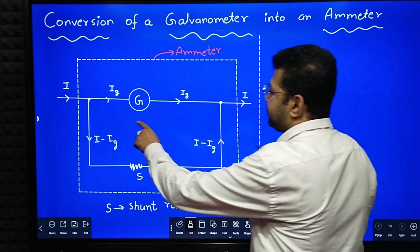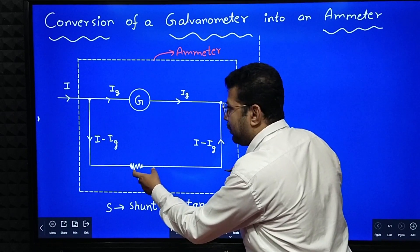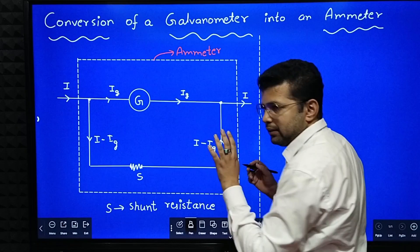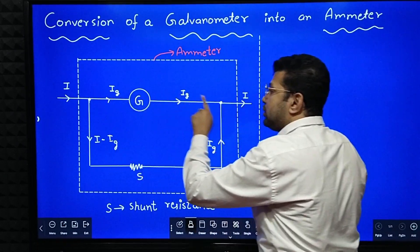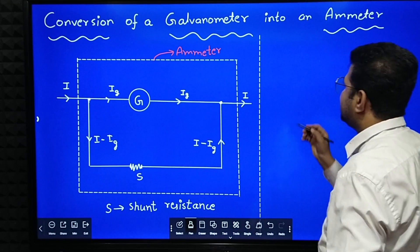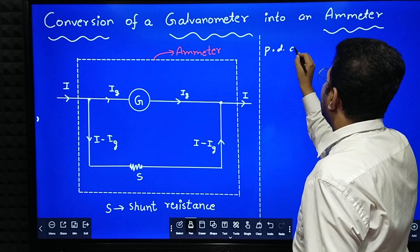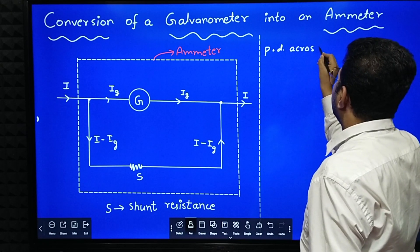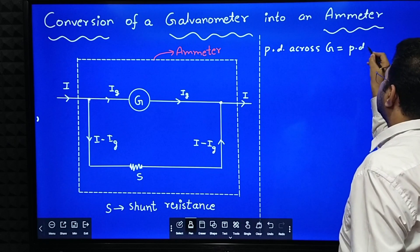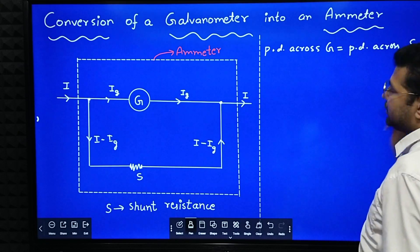So here what happens, once this low shunt resistance is connected in parallel, since the galvanometer and this resistance are connected in parallel, potential drop across the galvanometer is equal to potential drop across the shunt resistance. I'll write here, potential difference across G is equal to potential difference across S.